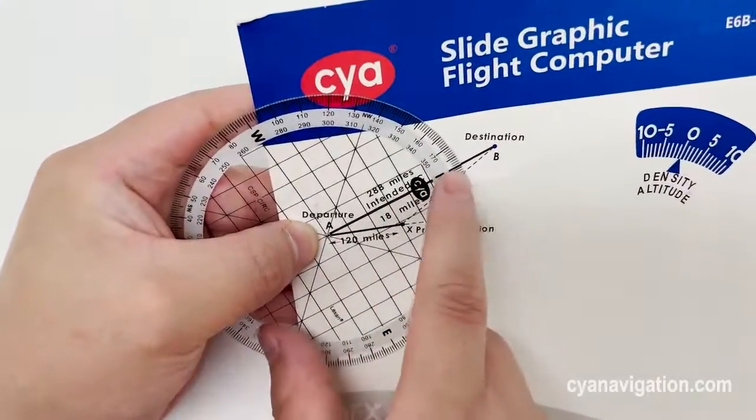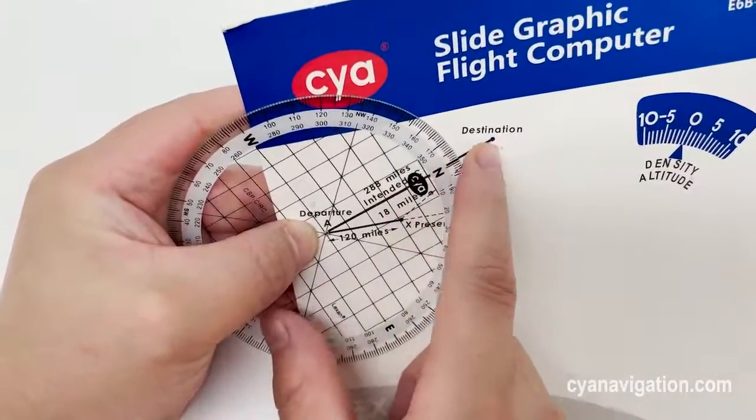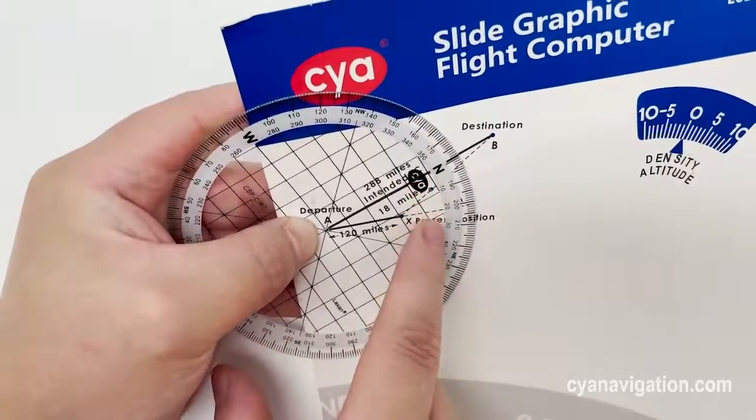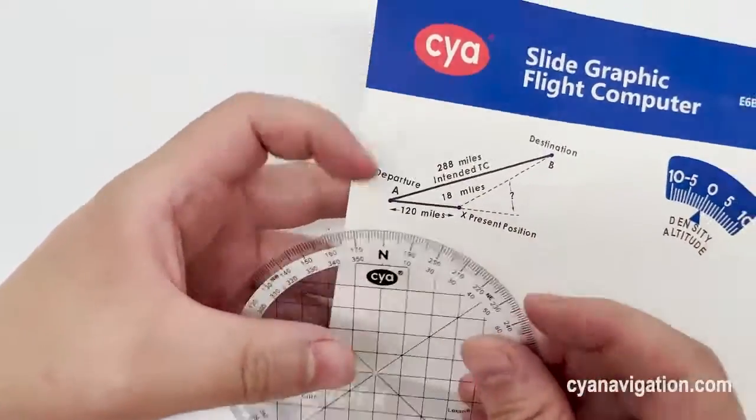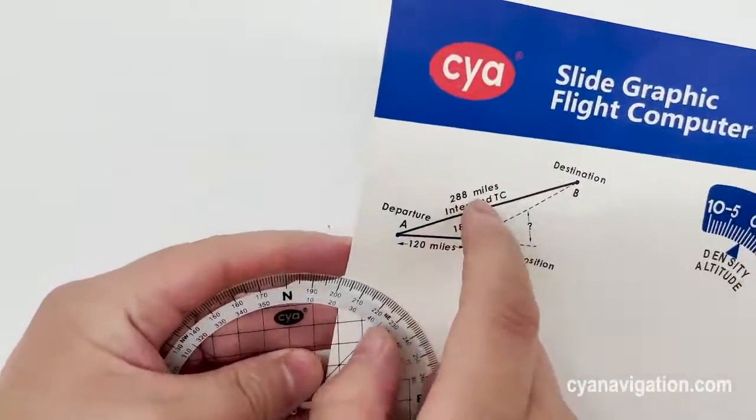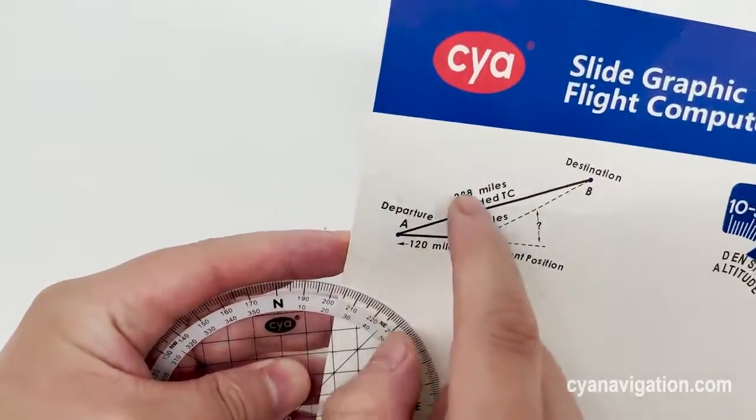For example, for this part, zero, ten, and twenty. We can also use this protractor to read the angles for this part.